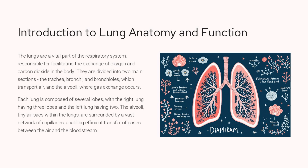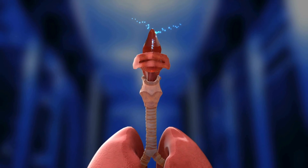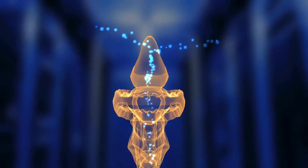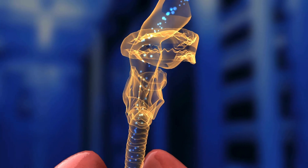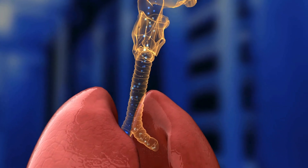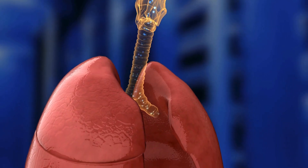The lungs are a vital part of the respiratory system, responsible for facilitating the exchange of oxygen and carbon dioxide in the body. They are divided into two main sections: the trachea, bronchi, and bronchioles, which transport air, and the alveoli, where gas exchange occurs. Each lung is composed of several lobes, with the right lung having three lobes and the left lung having two. The alveoli, tiny air sacs within the lungs, are surrounded by a vast network of capillaries, enabling efficient transfer of gases between the air and the bloodstream. This slide provides a detailed overview of the anatomy and function of the lungs, with a labeled illustration to help the audience visualize the key structures and processes.